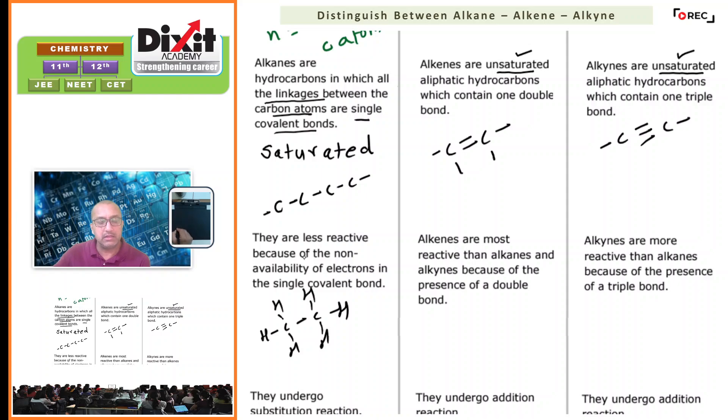In alkanes, carbon atoms are linked with single bonds. All four valencies are satisfied with single covalent bonds. Therefore, alkanes are less reactive. They show less reactivity towards common oxidizing and reducing agents, and therefore, alkanes are also known as paraffins.